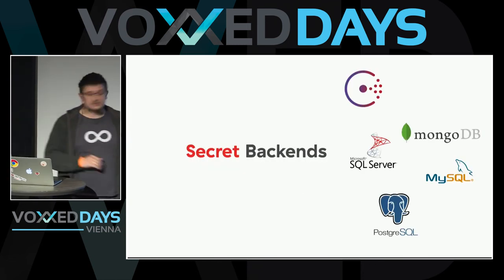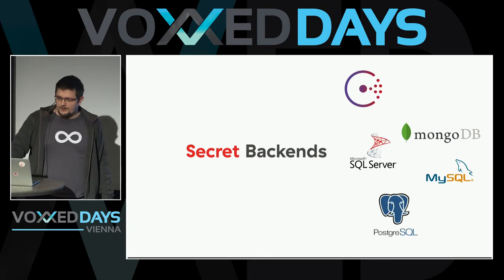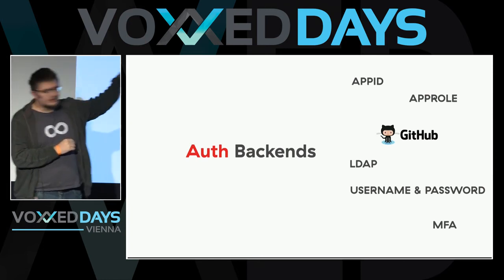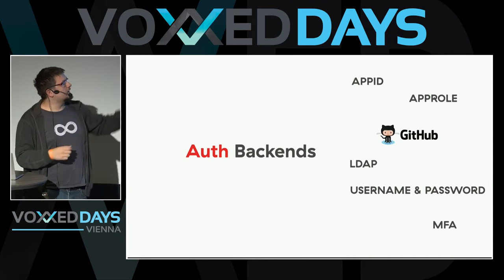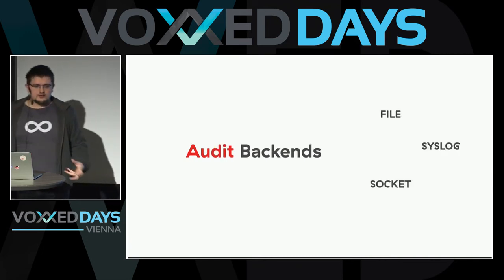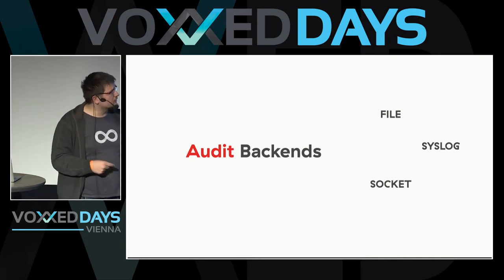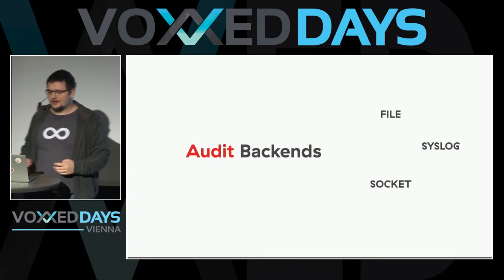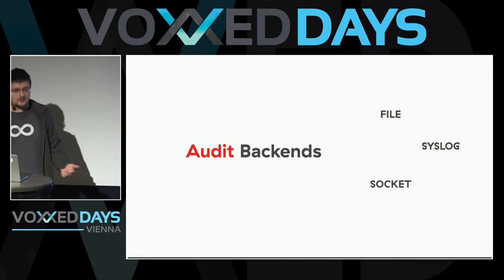The initialization process also generates a root token, which you should use only for initial setup and then discard — because it can do anything. Vault supports many storage backends to choose from. For authentication, you can use GitHub, which is one reason we chose Vault over Keywiz — it supports two-factor authentication. You also need audit logging to see what your users are doing; there aren't many options, but you can pipe logs into Elasticsearch, an ELK stack, or Graylog.